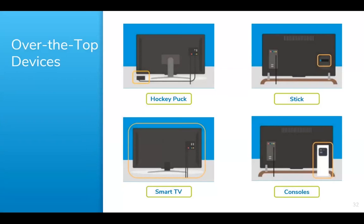I want to take a deeper dive and talk about common connected TV devices in the market today. We've got the hockey puck — your traditional Apple TV device. You've got your stick, such as your Amazon Fire, a very common device, and Roku sticks. You've also got your consoles — Xboxes, PlayStations. A lot of different devices, but they all serve the same purpose. And in our bottom left-hand corner we also have that smart television set.